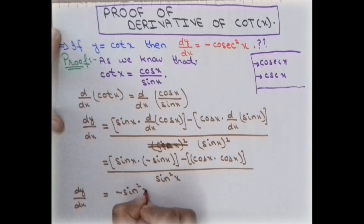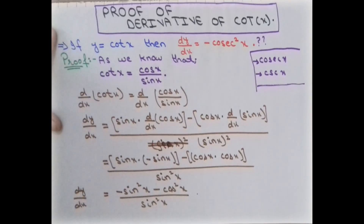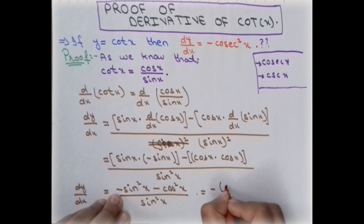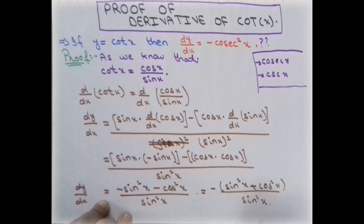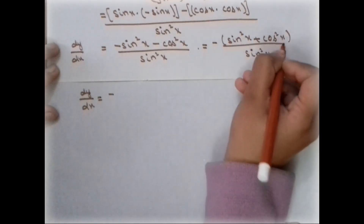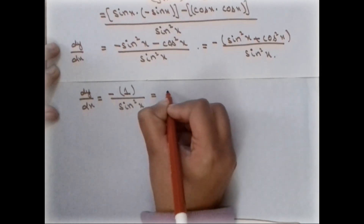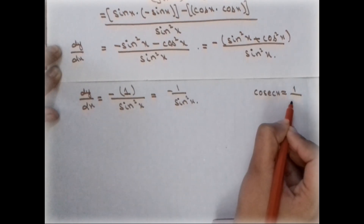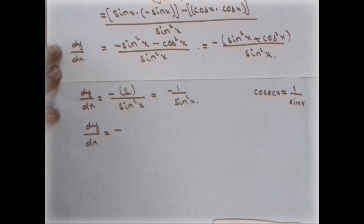After multiplying through, we get negative sin²(x) minus cos²(x), all divided by sin²(x). We factor out the negative sign, giving us minus times [sin²(x) + cos²(x)] divided by sin²(x). Using the Pythagorean trigonometric identity, sin²(x) + cos²(x) = 1, so this becomes minus 1 divided by sin²(x). Since cosecant of x is the reciprocal of sin(x), this equals negative cosecant squared of x.